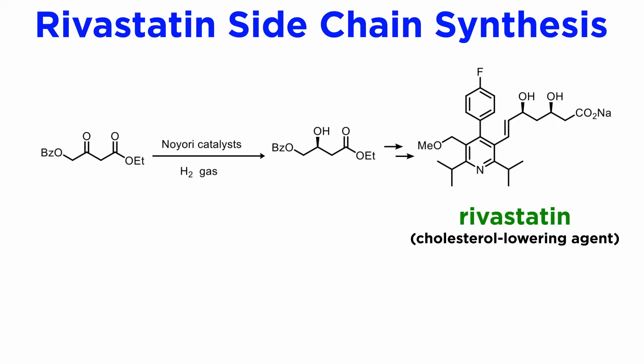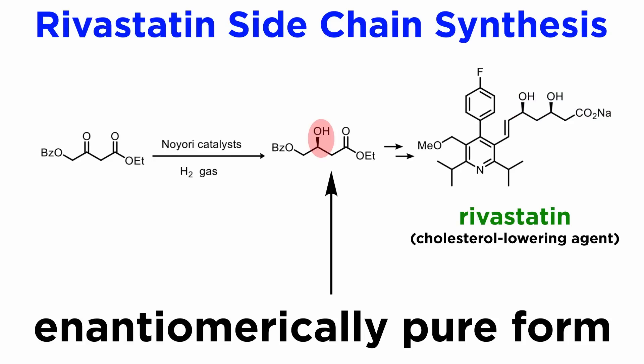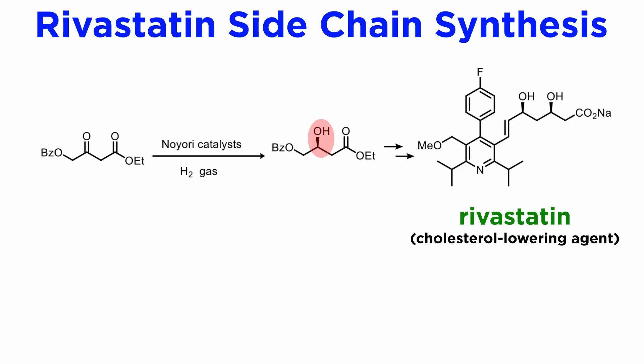One of the early applications of Noyori's technology concerns the synthesis of the side chain common to most cholesterol-lowering agents, like rivastatin. The first chiral alcohol moiety was prepared in enantiomerically pure form by an enantioselective ketone reduction. Once that center is established, the second one can be introduced by simple diastereoselective methods, using the stereogenic center just introduced to direct the formation of the second one.